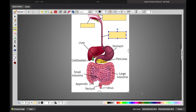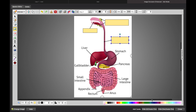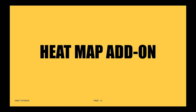You can select hide all, guess one, which will keep all the terms hidden and have you guess the highlighted one. Or you can select hide one, guess one, which will only hide the term you're guessing while the other terms remain visible.